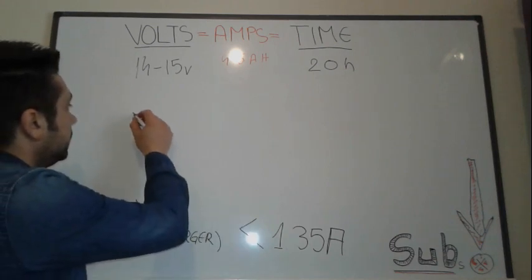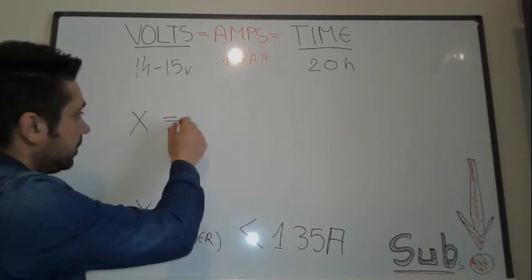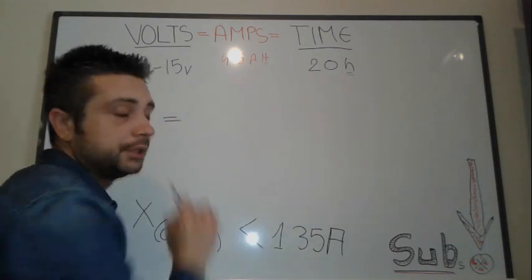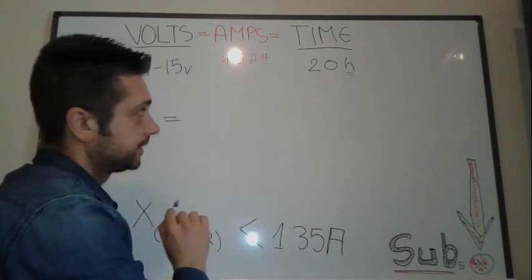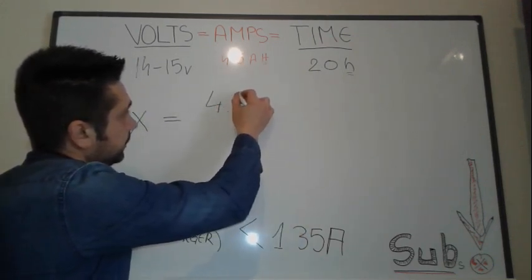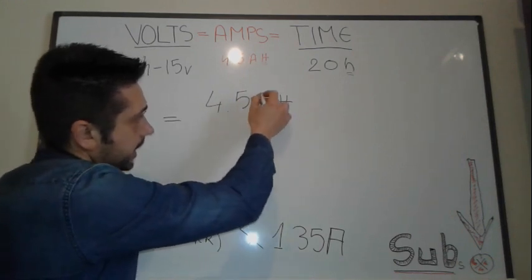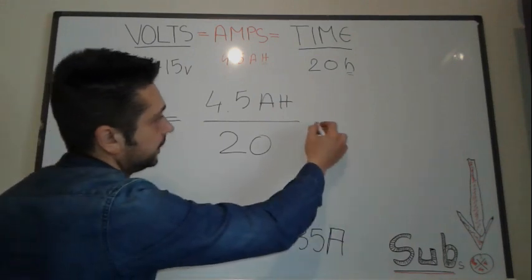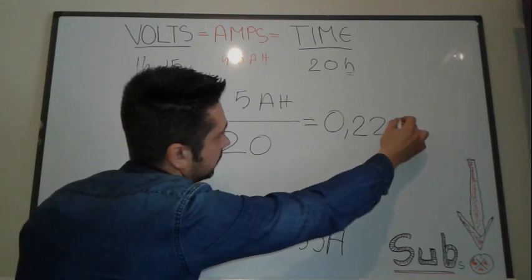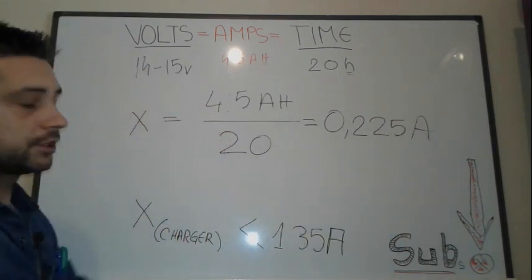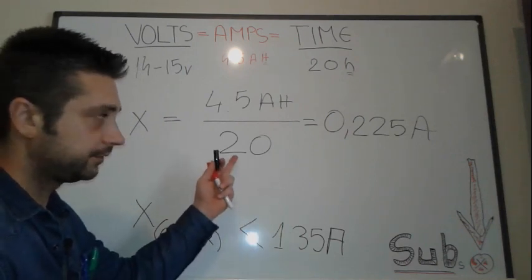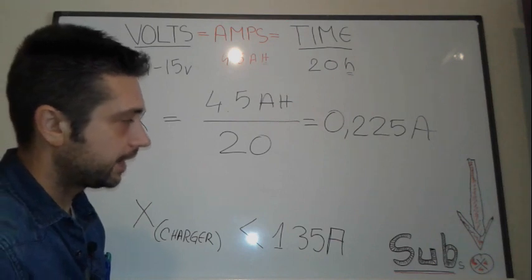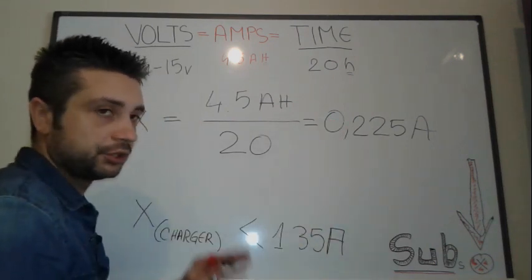Now we're gonna note it by X, our unknown charger. As we can see here, we have H being the same units of measurement which is hours. So we're gonna put 4.5 AH amp hours divided by 20 because this is what it says on the battery. We're gonna find out that this equals 0.225 amps.